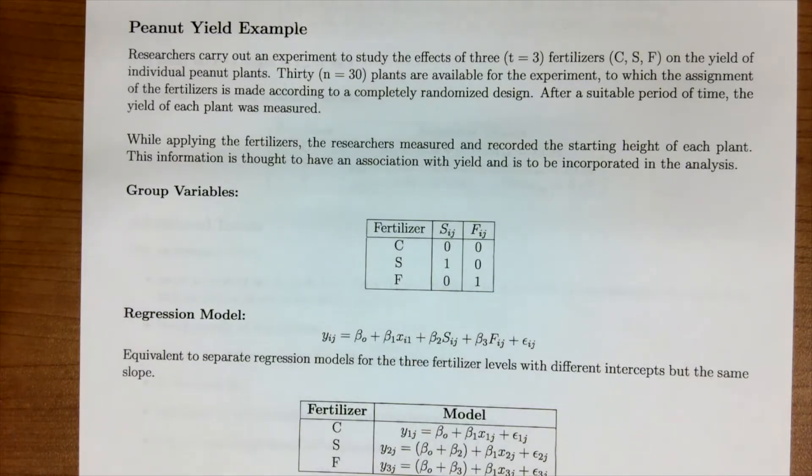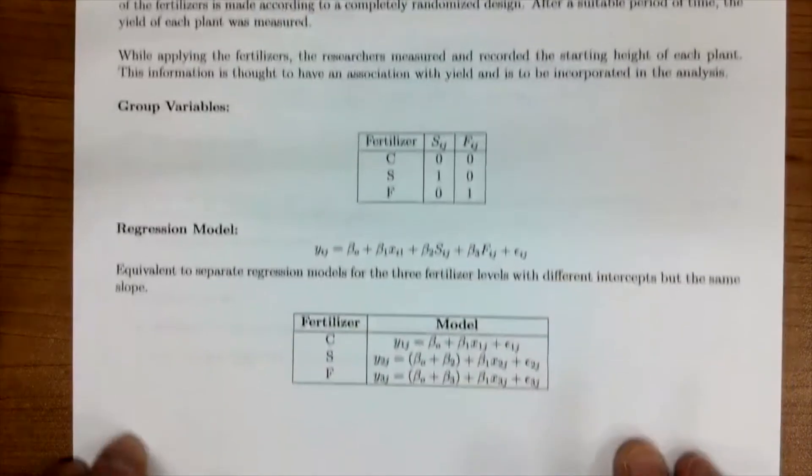This is equivalent to doing separate regression models for three fertilizers with different intercepts but the same slope. And again, we briefly covered this in lesson 13. And so what I mean by that is if we look at these models here,